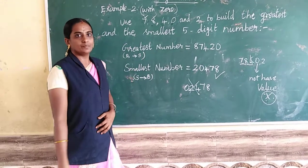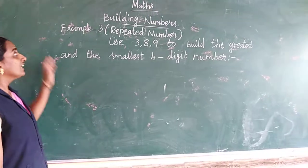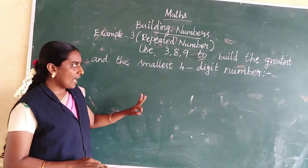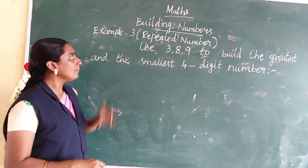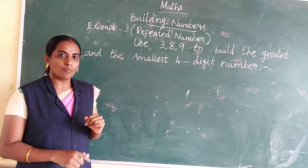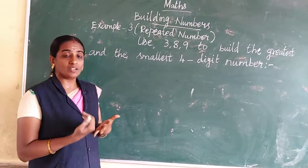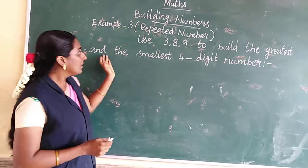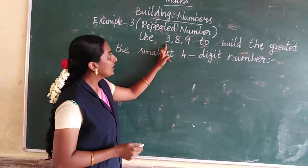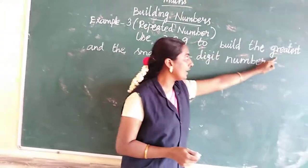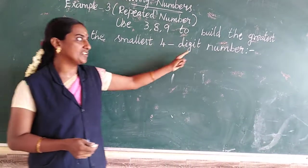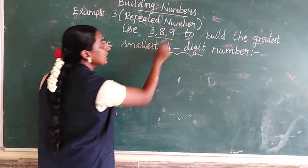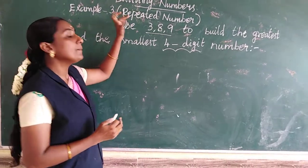Next is example 3 — repeated numbers. In example 1 we had 3 numbers to make a 3-digit number. Example 2 used 0. Now example 3 uses repeated numbers. Use 3, 8, 9 to build the greatest and the smallest 4-digit number. We have only 3 numbers but need a 4-digit answer, so we use a repeated number.